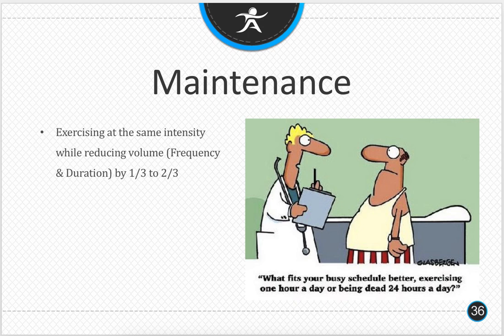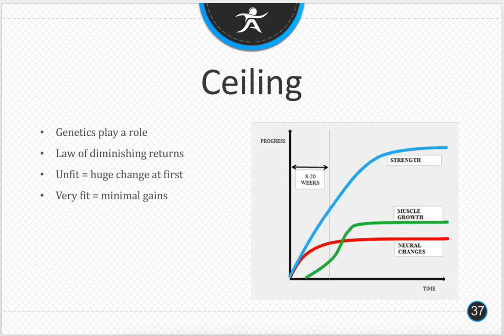Maintenance is unique in the sense that you can exercise at the same intensity while reducing the volume to maintain the gains you have. Once you reach that optimal level of fitness, you can actually reduce some of that volume, though you still have to have the same intensity. We know we're going to hit a ceiling — the law of diminishing returns. A lot of our patients will see huge gains because they haven't been exercising or because of injury and atrophy. With someone who's really elite and has maximized their potential for strength, you'll see smaller gains, but you can still see gains.